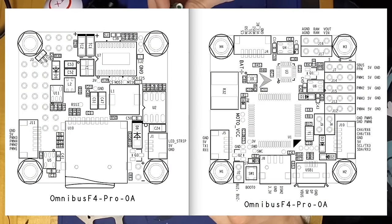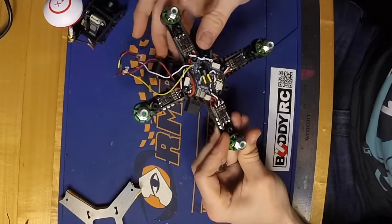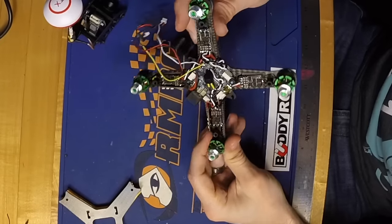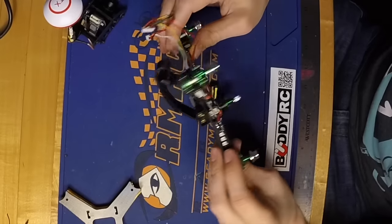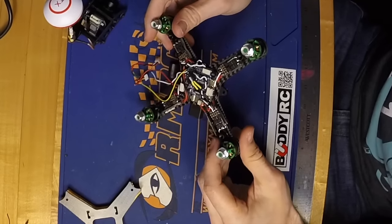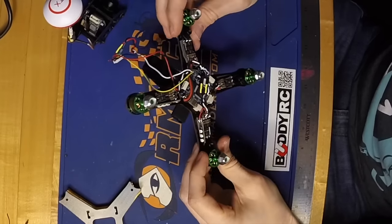Some of the features over the regular Omnibus that they've added are the barometer, the current sensor, and one of the things I'm most excited about is the memory card slot. I don't know if you've ever tried to export your black box data off of your flight controller, but it takes forever. Now I can just pop out the memory card, throw it in the MacBook, and I'm good to go.